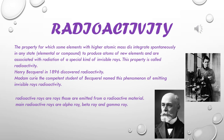Radioactive rays are rays emitted from a radioactive material. Main radioactive rays are three types: alpha rays, beta rays, and gamma rays.